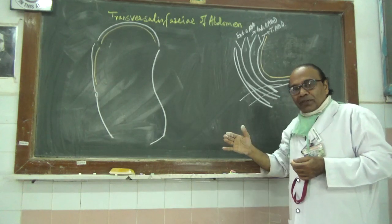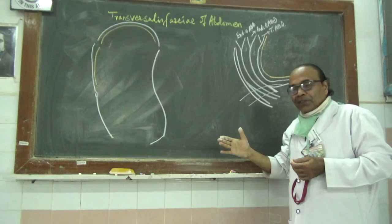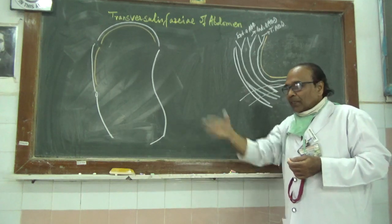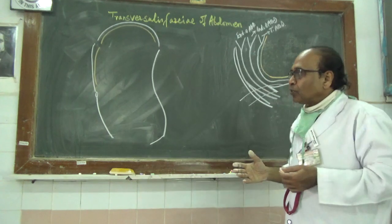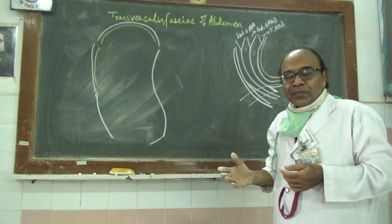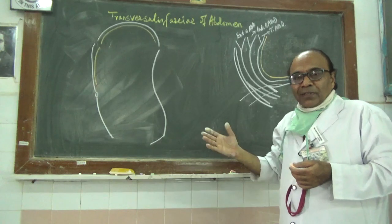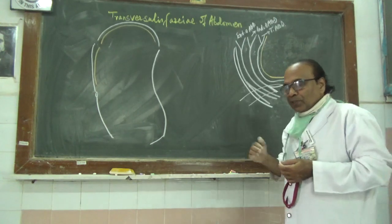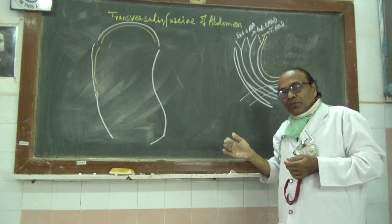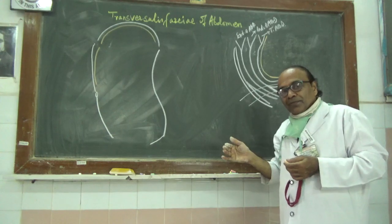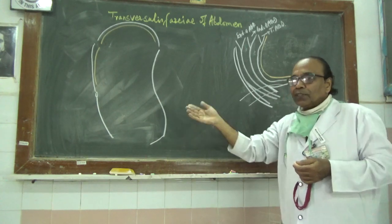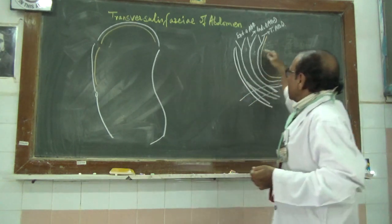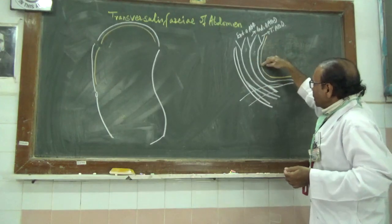One attachment is at the front, one is at the tip, and one is at the back. Then it will run laterally to cover the psoas major, then the quadratus lumborum, then the transversus abdominis, and then its aponeurosis.